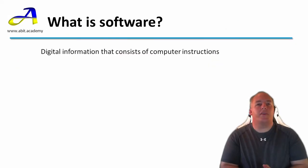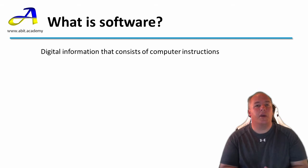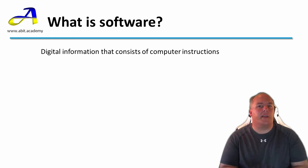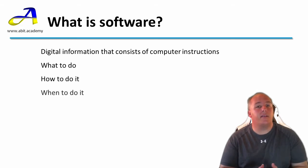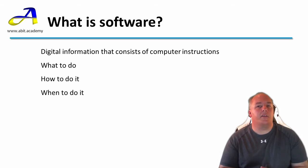Welcome back. Software is digital information that consists of computer instructions. We've explored the term digital information before — it's information that is stored digitally using a series of ones and zeros. So in this way we can store instructions that tell the computer what to do, how to do it, and when to do it. Remember that the computer has no intelligence and must be told each and every step required to perform a task.